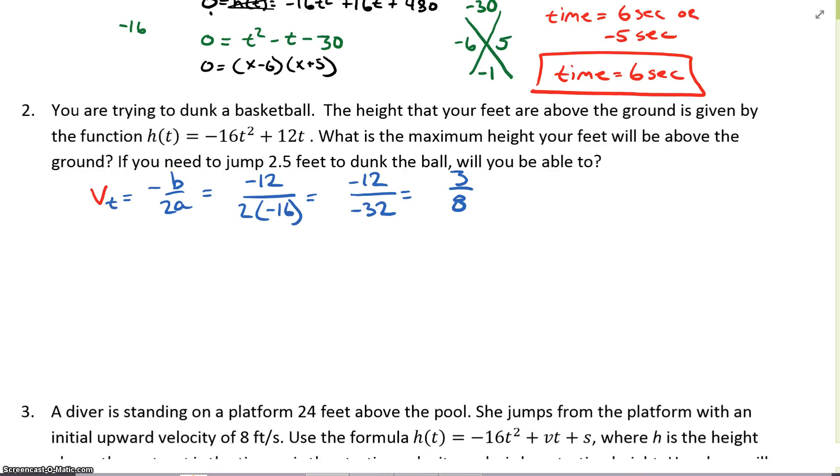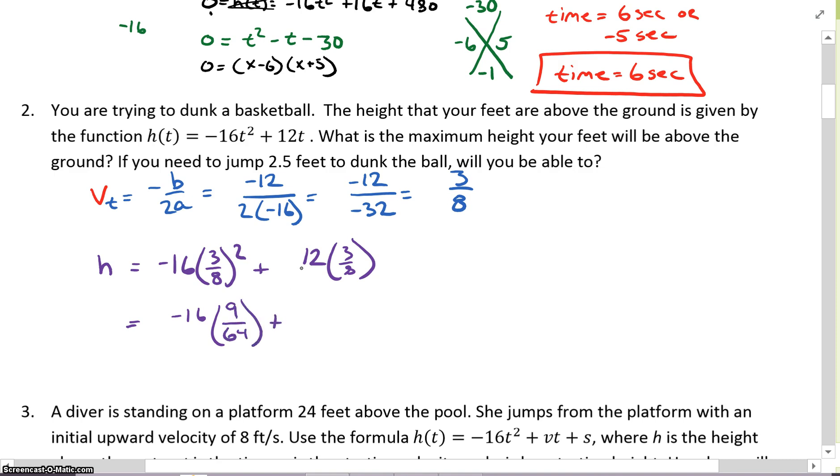To find our height, we've just got to plug that back in. So h equals -16 times (3/8)² + 12 times 3/8. That's going to be -16 times 9/64 + 12 times 3/8. 16 goes into 64 four times, so I have -9/4. 4 goes into 12 three times, 4 goes into 8 two times, so that's going to be 9/2.